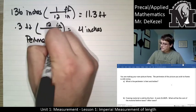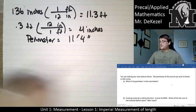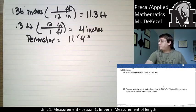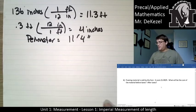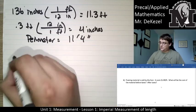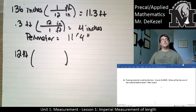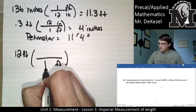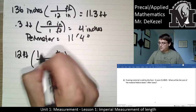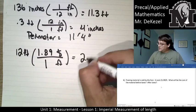So the perimeter equals 11 feet 4 inches. The second part of the question says material is sold by the foot and costs $1.89 per foot. If we need 11 feet 4 inches, we're going to have to buy 12 feet. So 12 feet is needed, and we multiply 12 by $1.89 to get $22.68 before taxes.